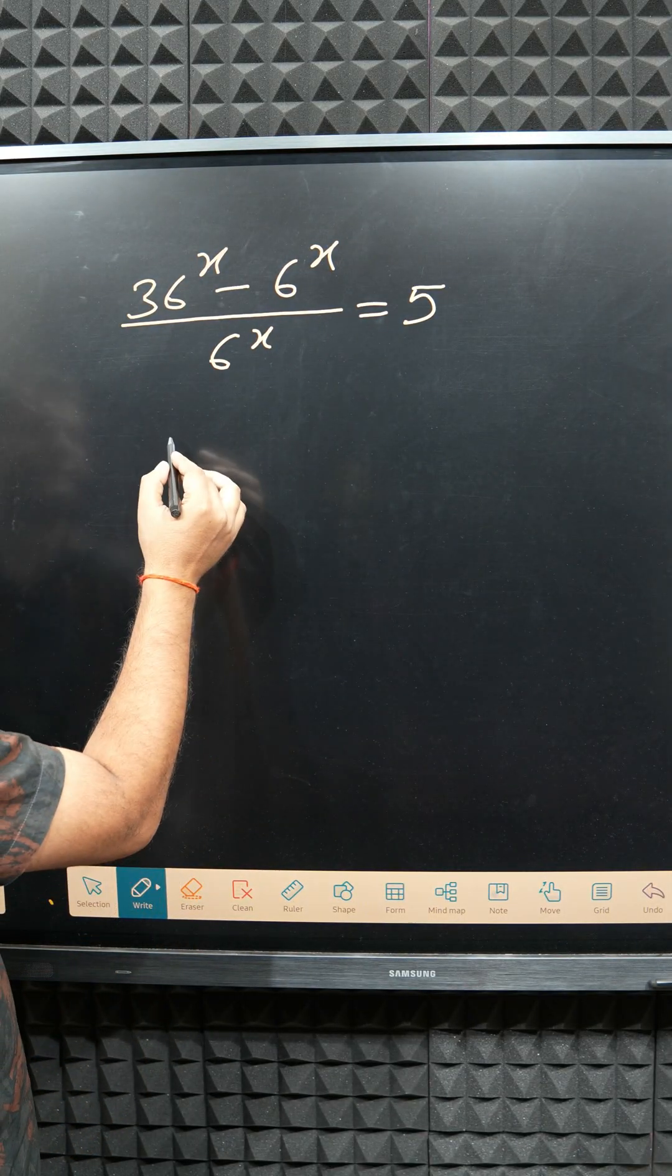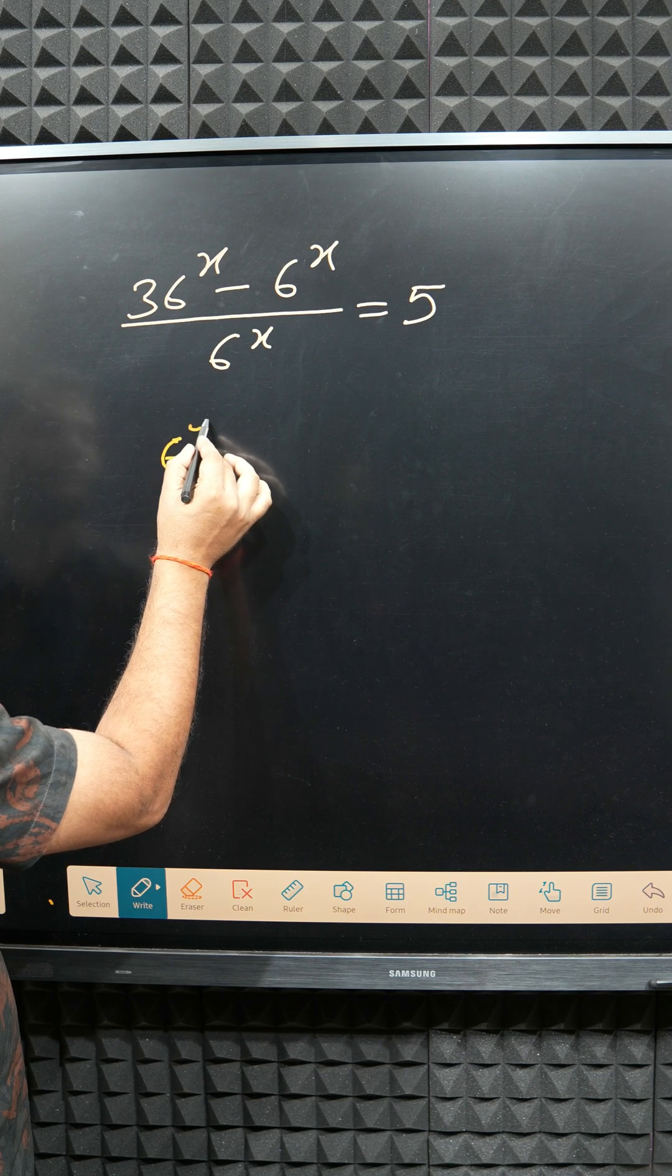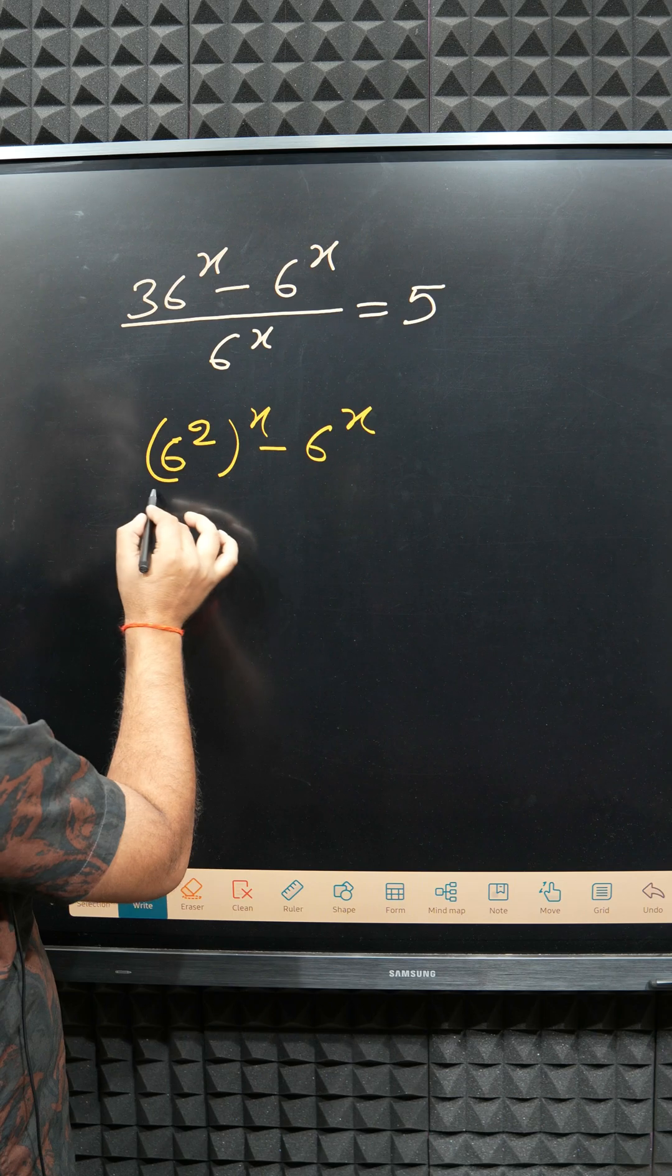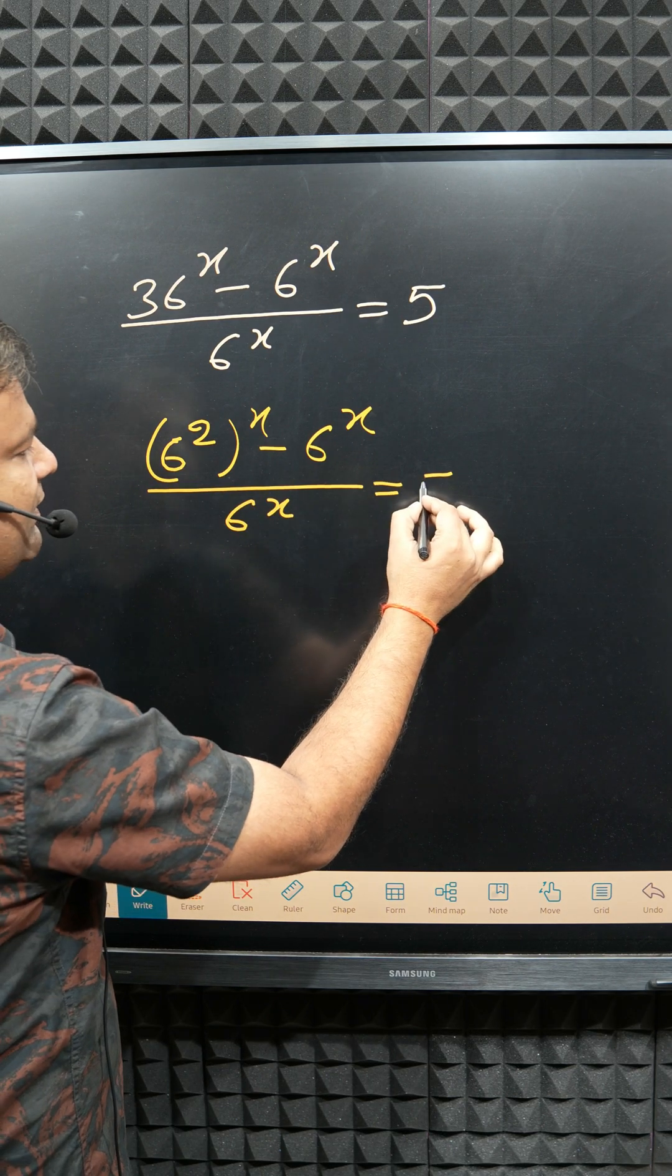Now 36 is written as 6 to the power 2 to the whole power x, and here 6 to the power x divided by 6 to the power x, this equals 5.